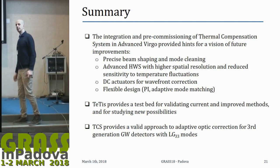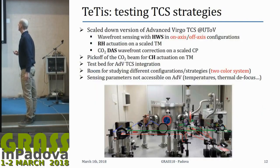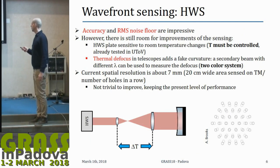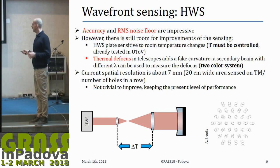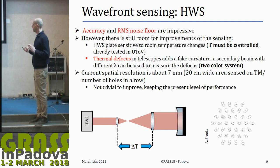Regarding the two-color system mentioned in one of the slides: it solves the problem of thermal defocus in the telescope used to fit the sensing beam to the test mass, since the distance between the two mirrors changes with temperature. An additional secondary beam that is reflected back before reaching the test mass allows measurement of the telescope's thermal defocus, which is then subtracted from the test mass wavefront sensing. A different wavelength is needed for the secondary beam so it reflects back before entering the test mass.